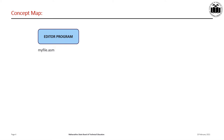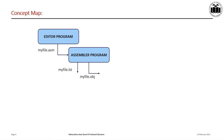The .asm source file containing the program code, created by the editor, is fed to an assembler. The assembler converts the instructions into machine code. The assembler will produce an object file and a list file with extension names .obj and .lst respectively. The list file is optional but is very useful to the programmer because it lists all codes and addresses as well as errors detected.